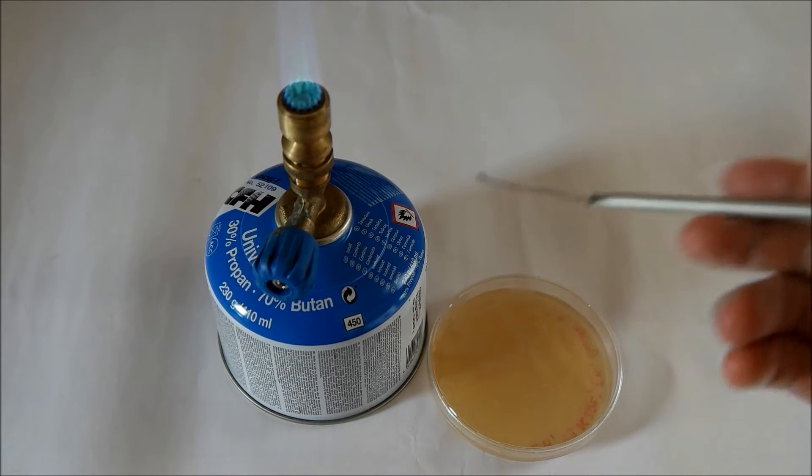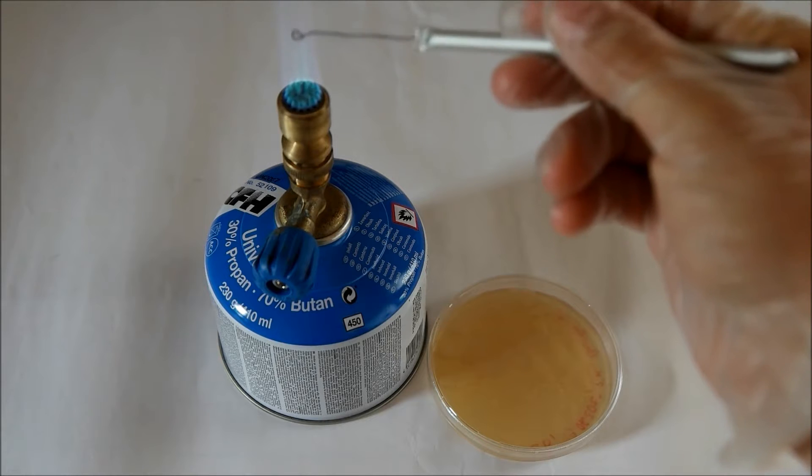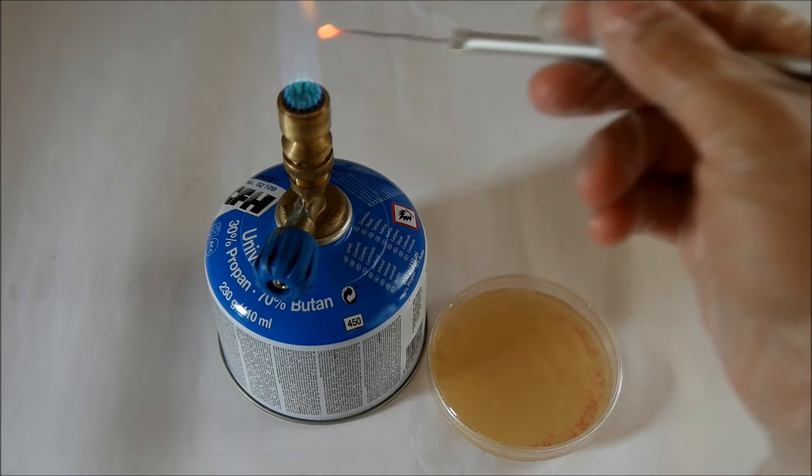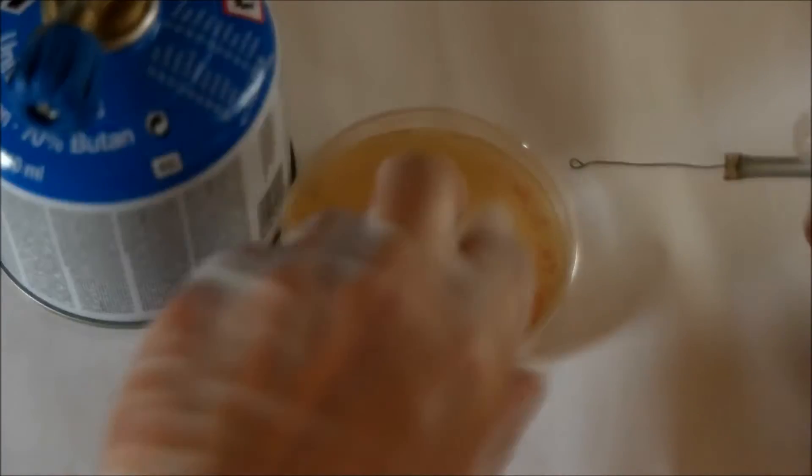First of all, you have to let your inoculation loop glow to make it free of bacteria. I'll take some bacteria out of the agar plate.